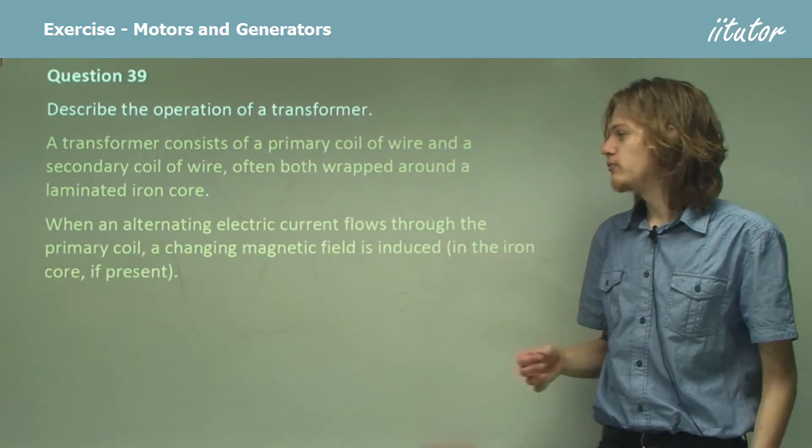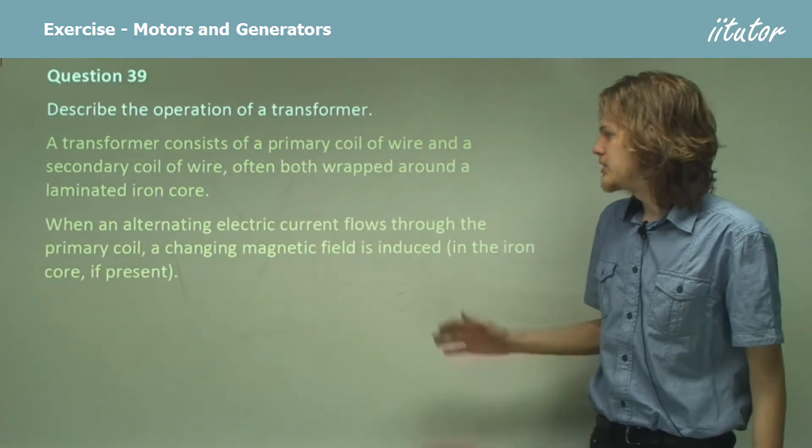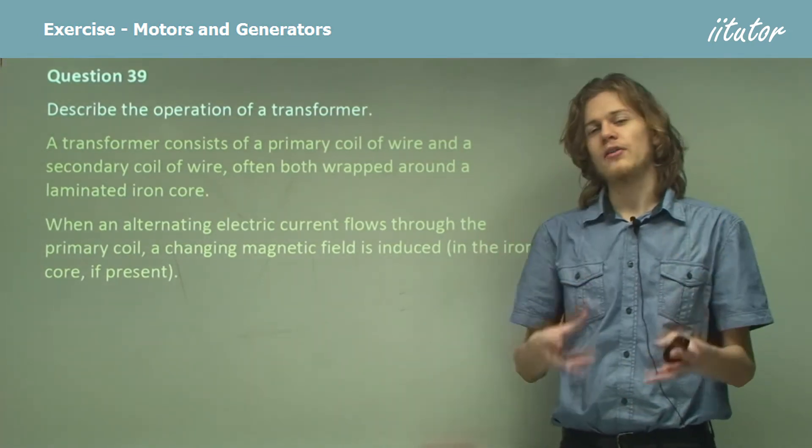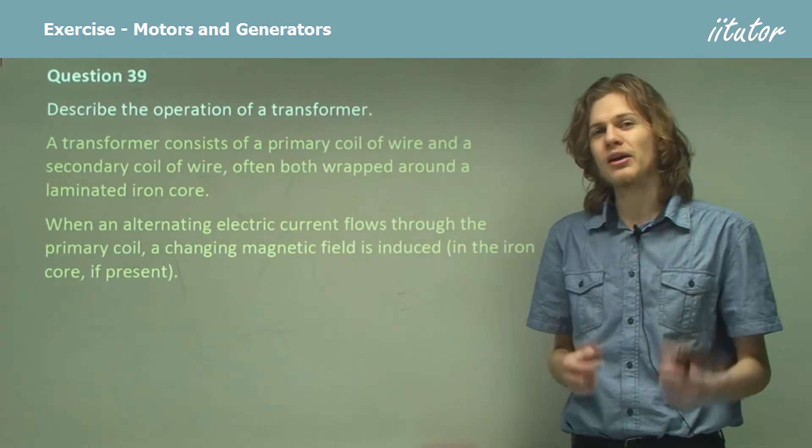When an alternating electric current flows through the primary coil, a changing magnetic field is induced. If there's an iron core, the magnetic field is induced inside that core and it will sort of contain the magnetic flux.